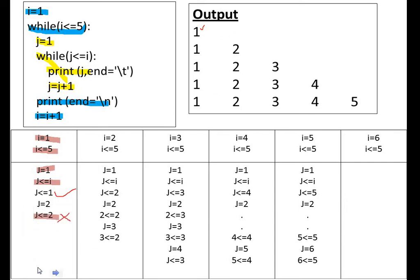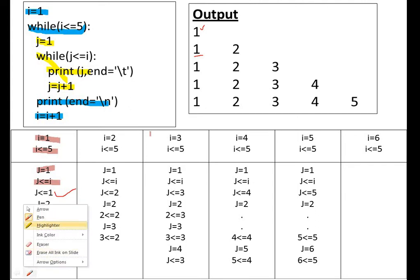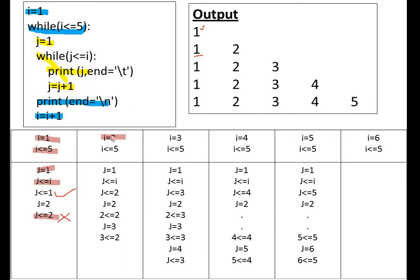The cursor comes to the next line, then i equal to i plus one, so i increases to two. Now it checks i less than or equal to five — condition is true. When the outer loop increments, the inner loop starts from the beginning: j equal to one, j less than or equal to i means one less than or equal to two — condition is true, so one is printed.